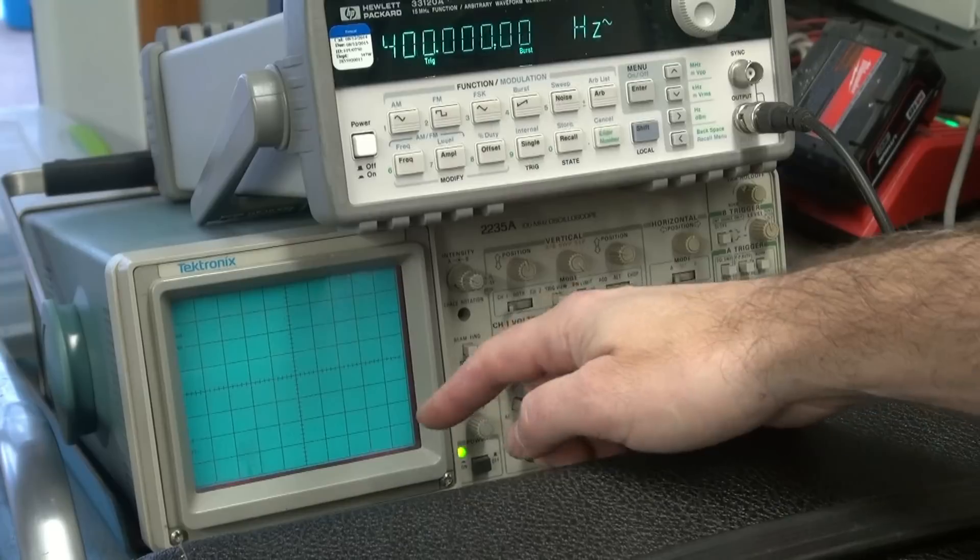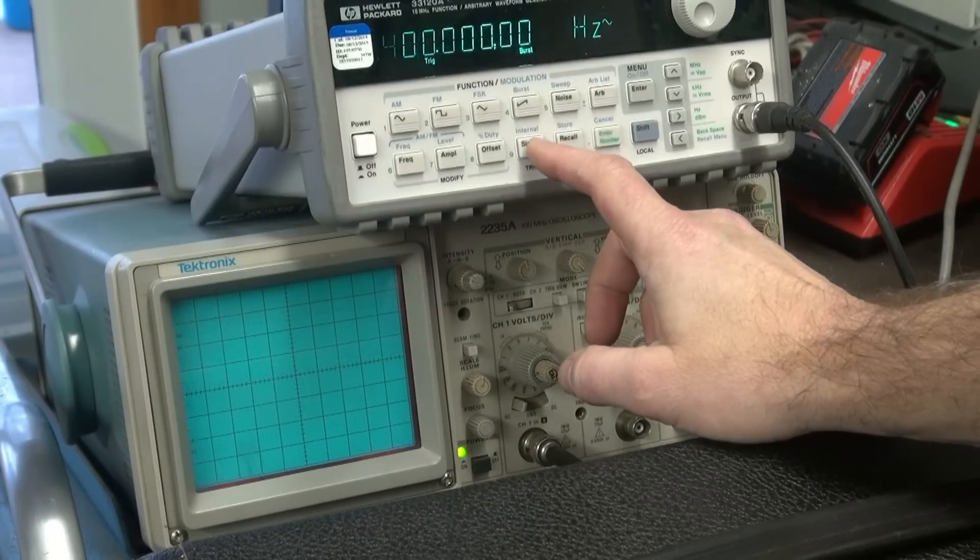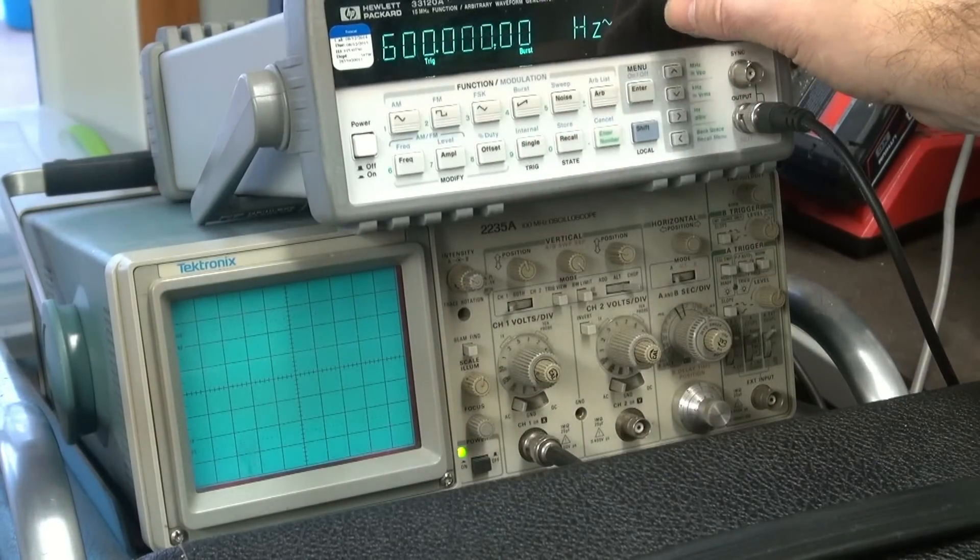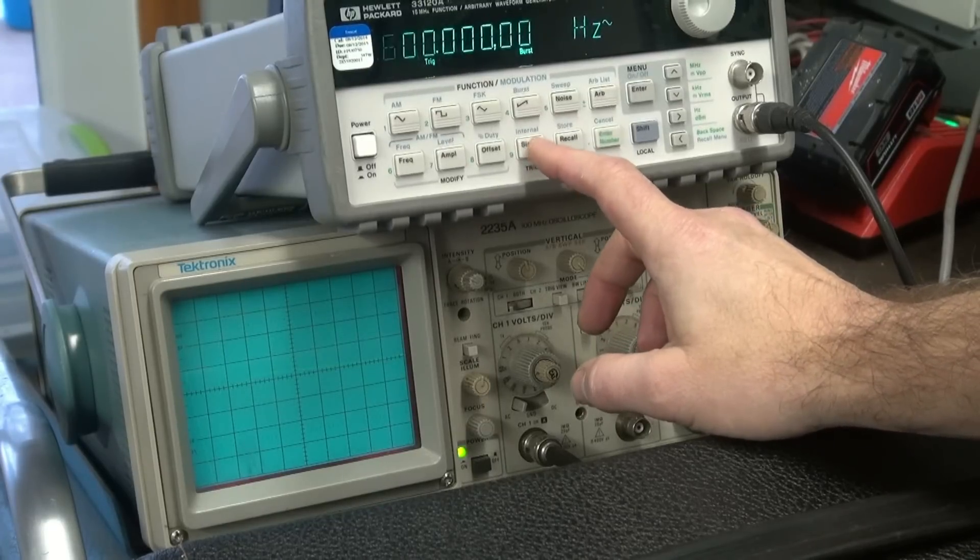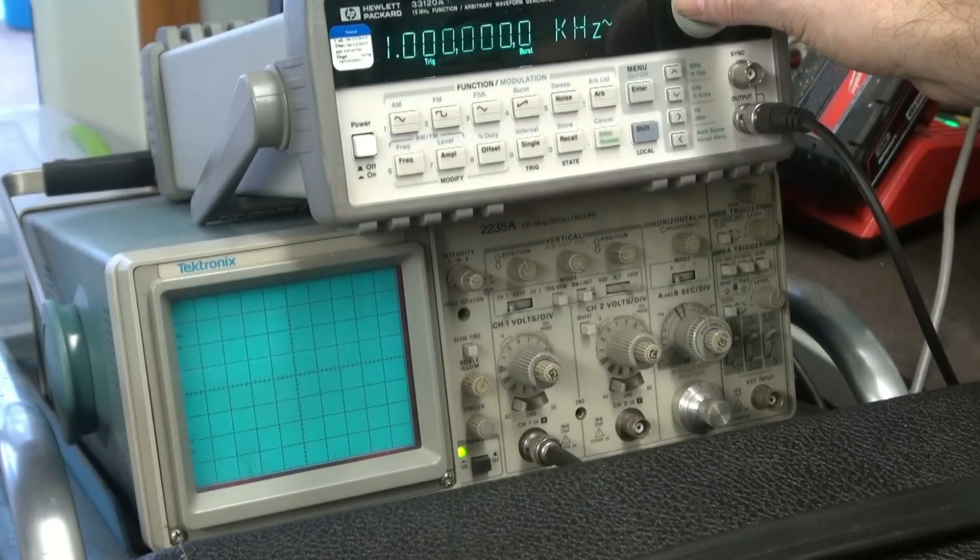Now if there was distortion or ringing I would see it. And then you can change your frequency. Let's say it's 600 Hz. Let's say it's 1000 Hz.